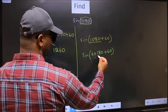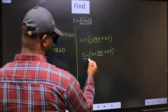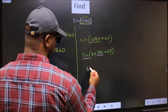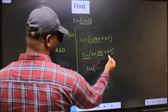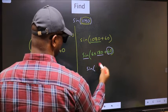Next, here we have 180. So sin is not going to change. It will remain sin. And inside, we get this angle 60.